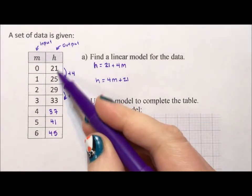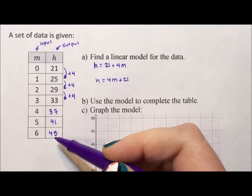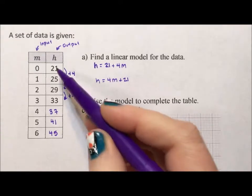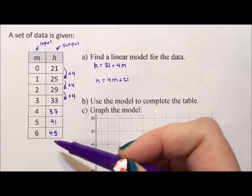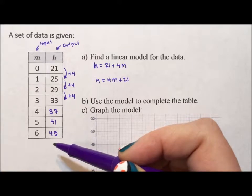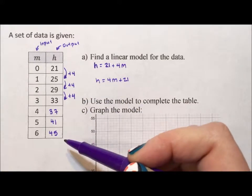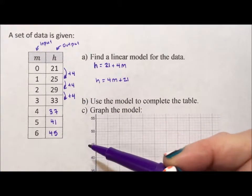Graph the model. Now we have seven data points. And the habit I see students doing is they want to graph all of these points. I ask you not to do that. Unless you are specifically told to graph all these data points, don't. It's just going to get into the way.